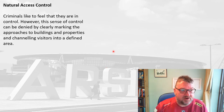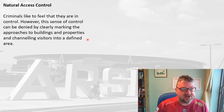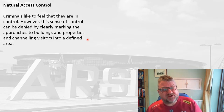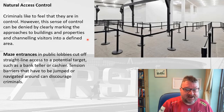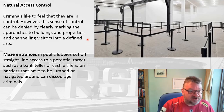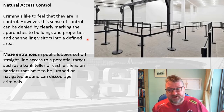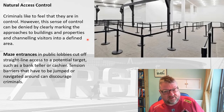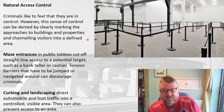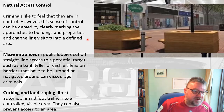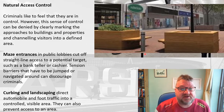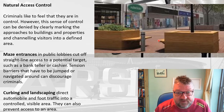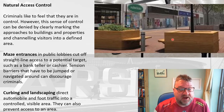Natural access control is about taking control away from criminals. Criminals like to feel in control, but you can deny that by clearly marking approaches to buildings and channelling visitors into a defined area. Maze entrances in public lobbies are a good example — they cut off straight-line access to a potential target such as a bank teller or cashier. Tension barriers discourage criminals, and curbing and landscaping direct automobile and foot traffic into a controlled, visible area and can prevent access entirely. Increasingly in town centres you see bollards that stop people driving cars into areas.